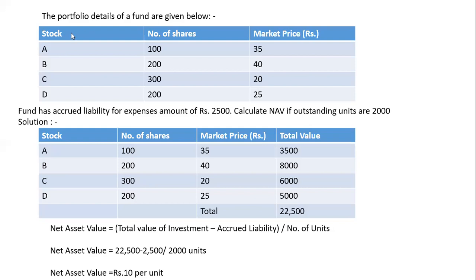This is a fund, a portfolio. Portfolio means fund. This fund is having four stocks. These shares are purchased by AMC, Asset Management Company. These are the prices at which the stocks are purchased. The fund is having outstanding expenses of 2500. You have to calculate the net asset value, calculate NAV, if outstanding units are 2000.